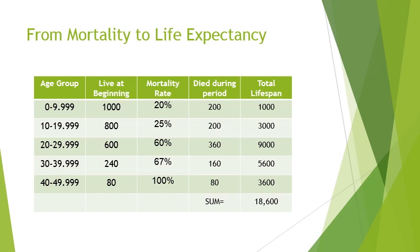We add up all the lifespans of the 1000 newborns: 1000 + 3000 + 9000 + 5600 + 3600 = 18,600 person-years. Dividing 18,600 by 1000 gives the life expectancy of 18.6 years. This is called life expectancy at birth. If 1000 people are born on January 1, 2017, the average lifespan under these mortality rates will be 18.6 years.